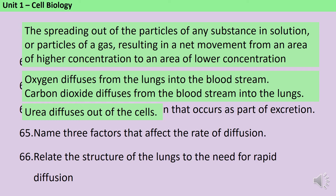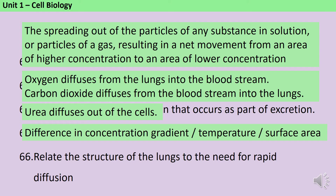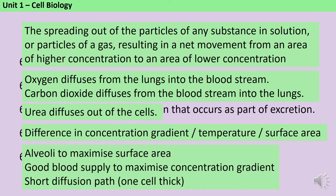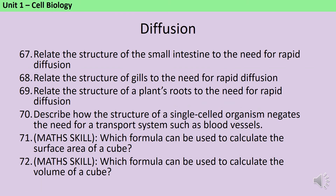The speed of diffusion can be controlled by differences in the concentration gradient, the temperature and also the surface area. In the lungs, the alveoli maximise the surface area. There's a really good blood supply, so there are capillaries going to all those different alveoli to maximise the concentration gradient. And there's a really short diffusion path because the wall across which gas exchange happens is only one cell thick. Likewise in the small intestine, in the same way that the lungs have alveoli, the small intestine has villi — those small finger-like projections that increase the surface area to maximise the speed of diffusion. Again there's a very short diffusion path and a really good blood supply with lots of capillaries to maximise the concentration gradient.